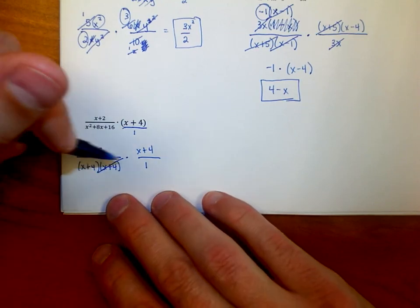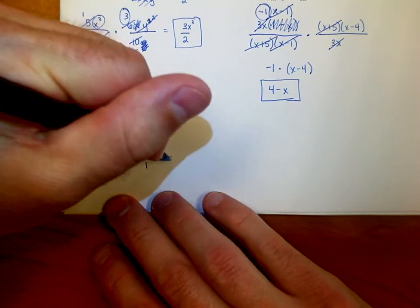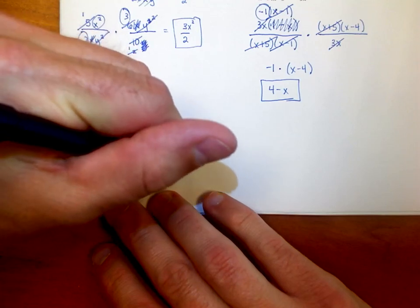Now I see that one of the (x + 4) goes away from the top and the bottom, and I'm left with (x + 2) over (x + 4).